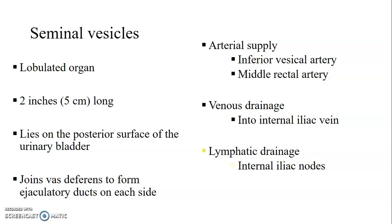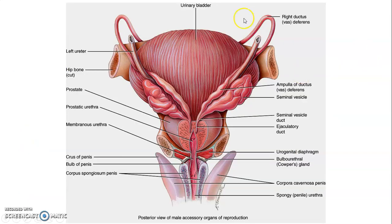The seminal vesicle is a lobulated organ two inches long that lies posterior on the posterior surface of the urinary bladder. It joins the vas deferens to form ejaculatory ducts on each side. Remember, the vas deferens comes from the epididymis in the scrotum. The posterior part of the bladder: the vas deferens joins the seminal vesicle to form ejaculatory ducts that open on the prostatic urethra. The arterial supply of the seminal vesicle is by the inferior vesical artery and middle rectal artery, while venous drainage is into the internal iliac vein. Lymphatic drainage is by the internal iliac lymph nodes.